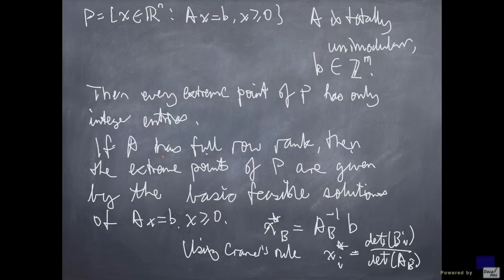Now what happens if A does not have full row rank? Well, that means A has some redundant rows. And we can use Gaussian elimination to identify the redundant rows and get rid of them. So we end up with a system, after deleting those redundant rows, that has a coefficient matrix with full row rank. And then we can apply this result. So if you replace A by a node-arc incidence matrix, then this polyhedron will have only integer extreme points.